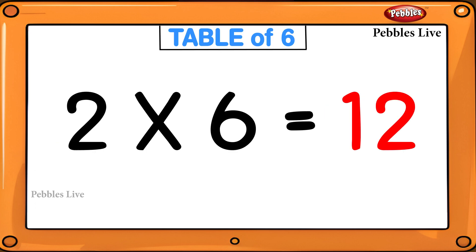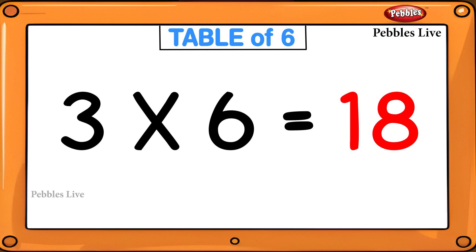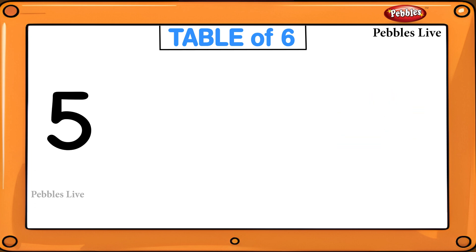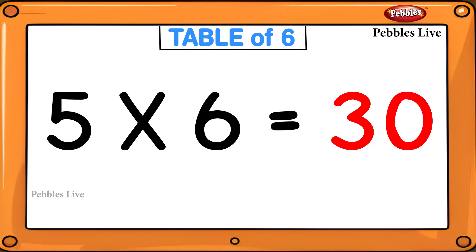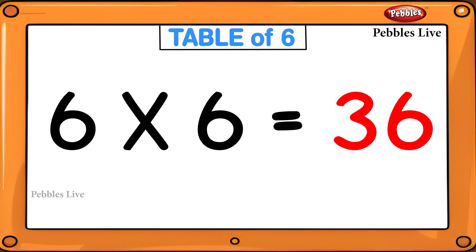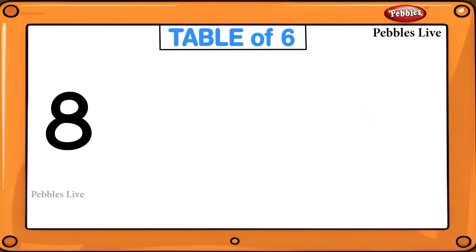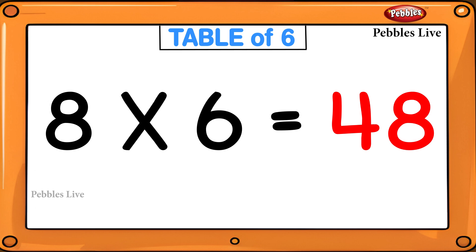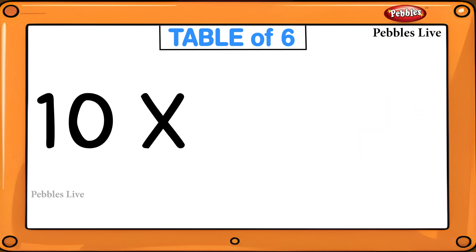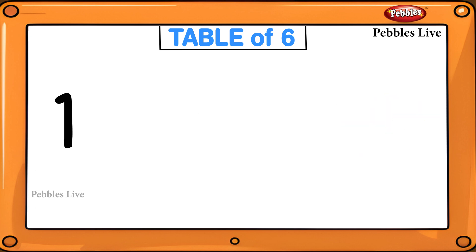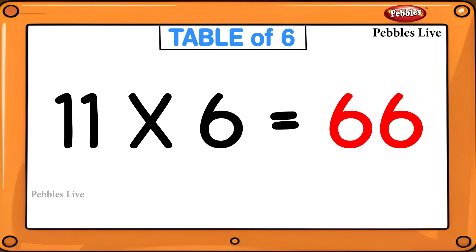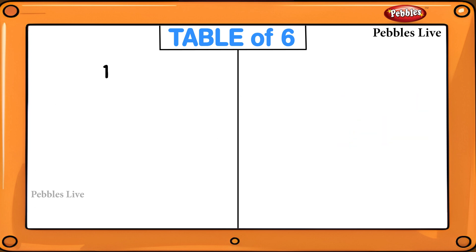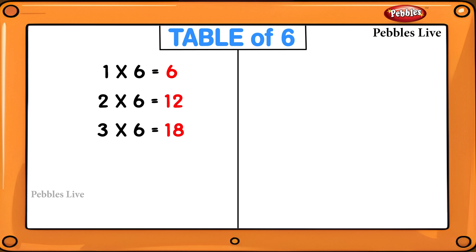2 six are 12, 3 six are 18, 4 six are 24, 5 six are 30, 6 six are 36, 7 six are 42, 8 six are 48, 9 six are 54, 10 six are 60, 11 six are 66, 12 six are 72. 1 six are 6, 2 six are 12, 3 six are 18, 4 six are 24.